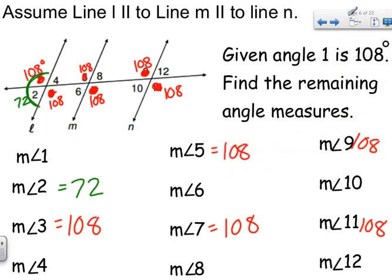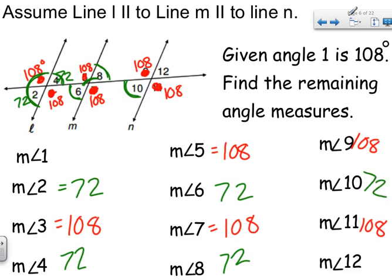Here's why the remaining angles are all 72: angles two and four are vertical, so four is also 72. Four and six are alternate interior angles, so six is 72. Six and eight are vertical, so they're equal — 72. Eight and ten are alternate interior, therefore 72. Then ten and twelve are vertical, so twelve is 72. Or you could use a linear pair. If you know one, you can figure them all out.